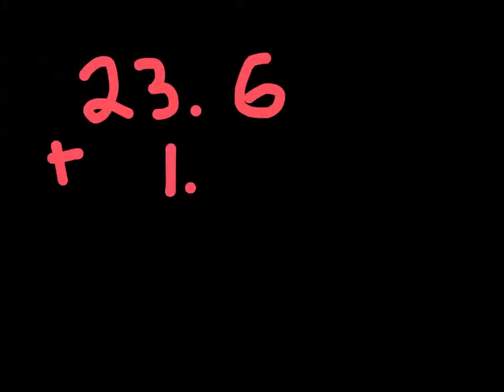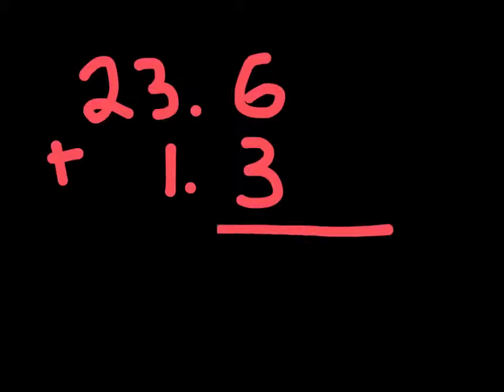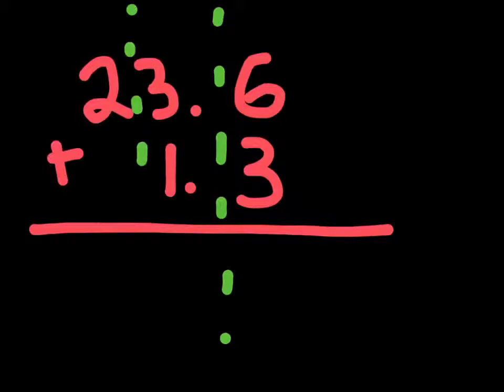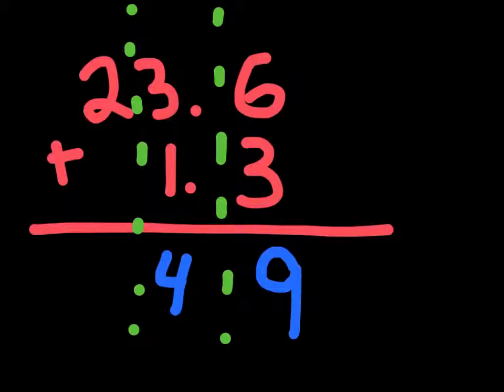Let's say we have 23.6 plus 1.3. Let's add these together. Well, we know that we usually break these up into columns, and then we add. Well, we know that 6 plus 3 is just 9. 3 plus 1 is just 4. And then 2 just comes down because it's not being added with anything.